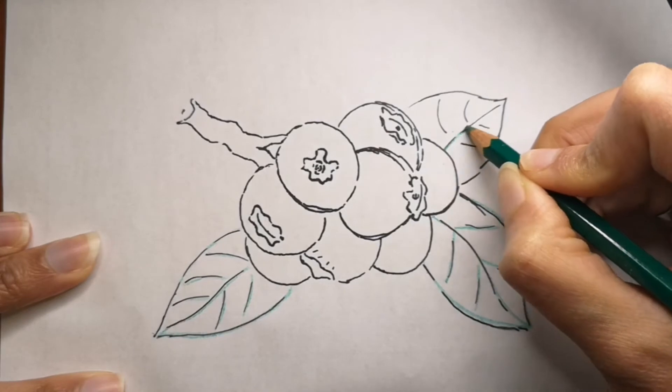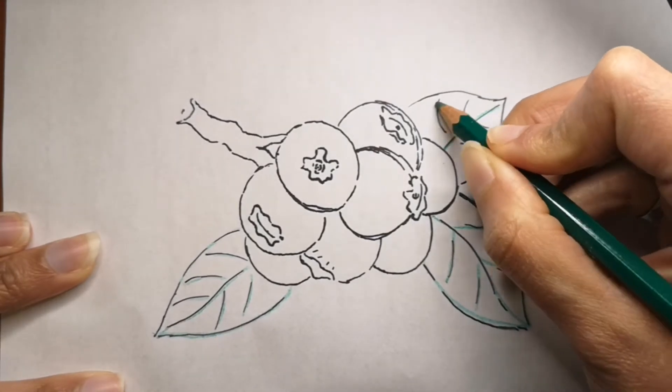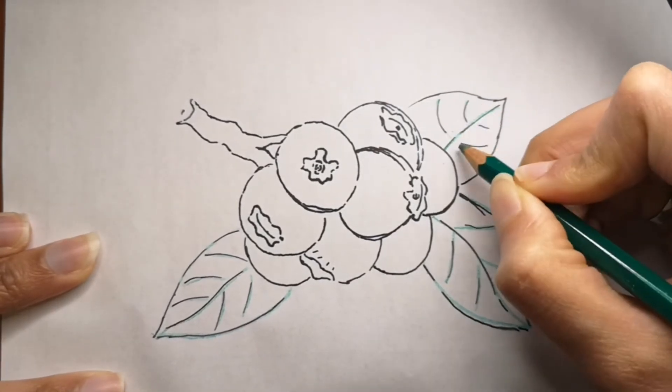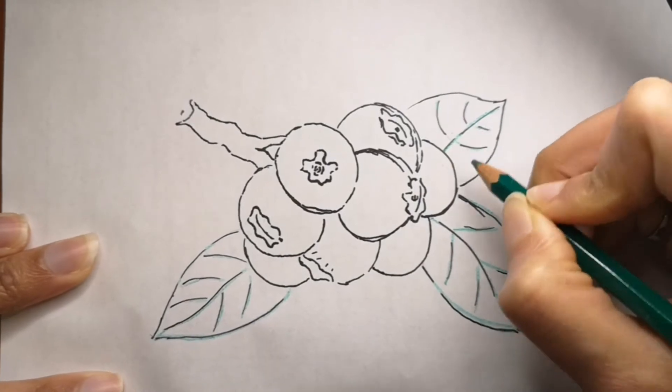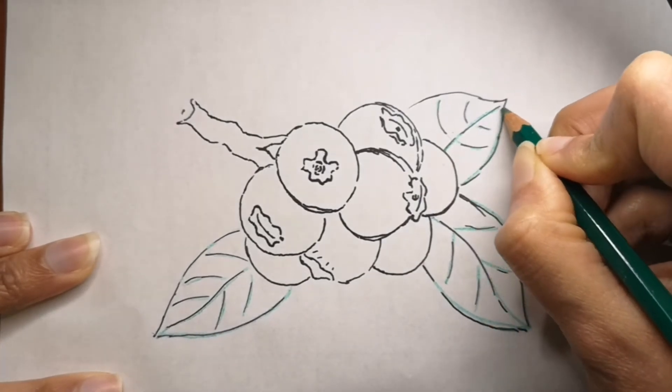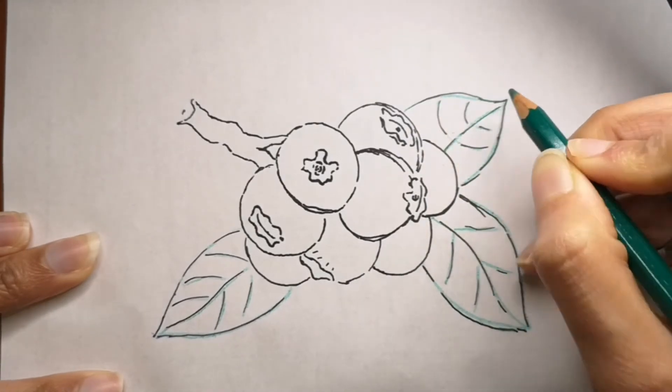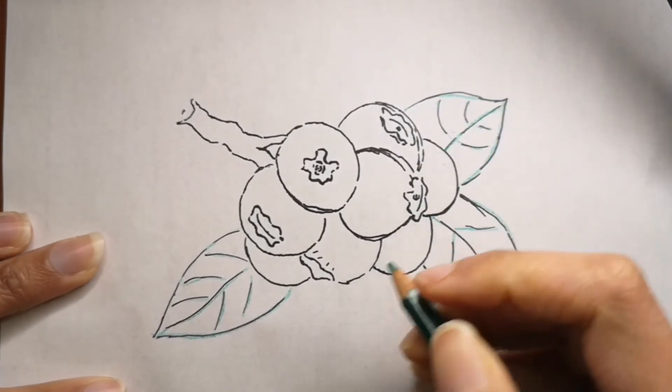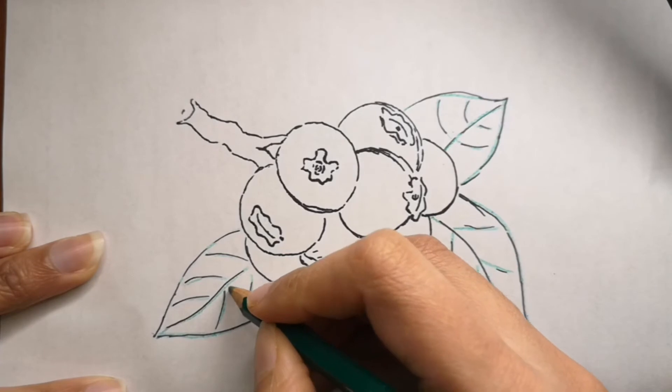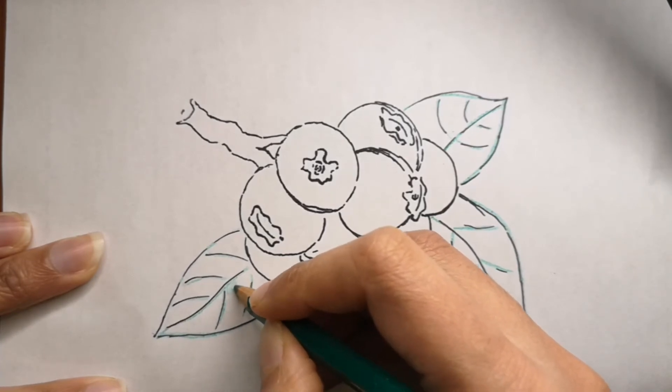When you're drawing, if you used a pencil, after you color it you can just erase out the pencil marks as well, so that you don't see those pencil marks and you will only see the colors, which will make it look even nicer and more realistic. So you can do that as well.